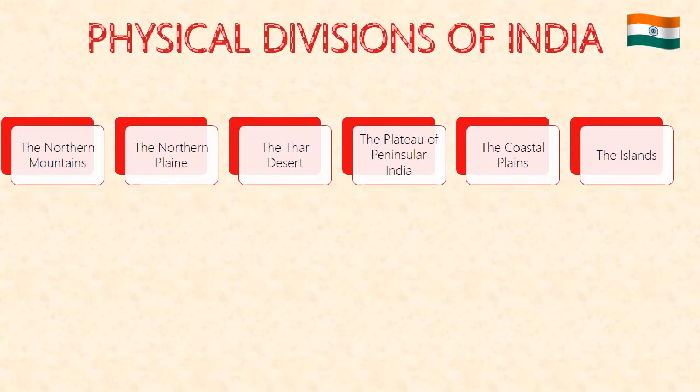In the physical divisions of India we have six subdivisions: the northern mountains, northern plains, the Thar Desert, the plateau of peninsular India, coastal plains and the islands.